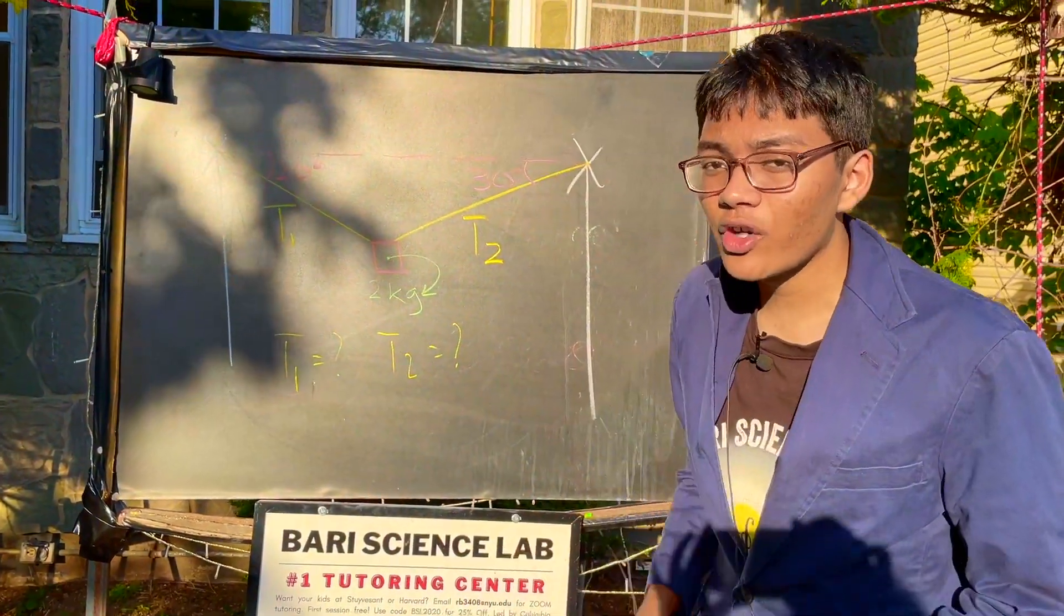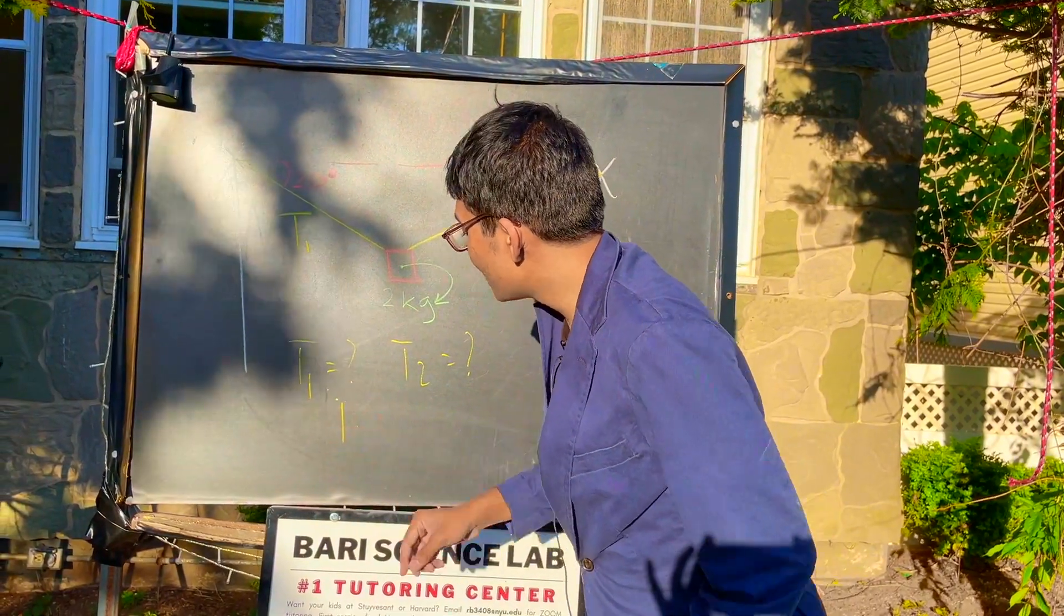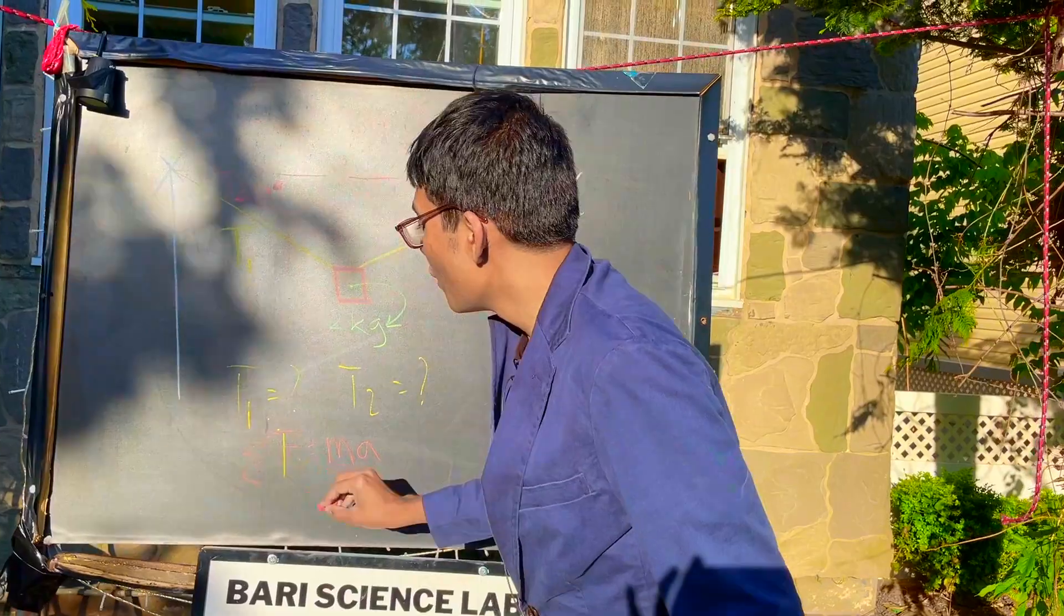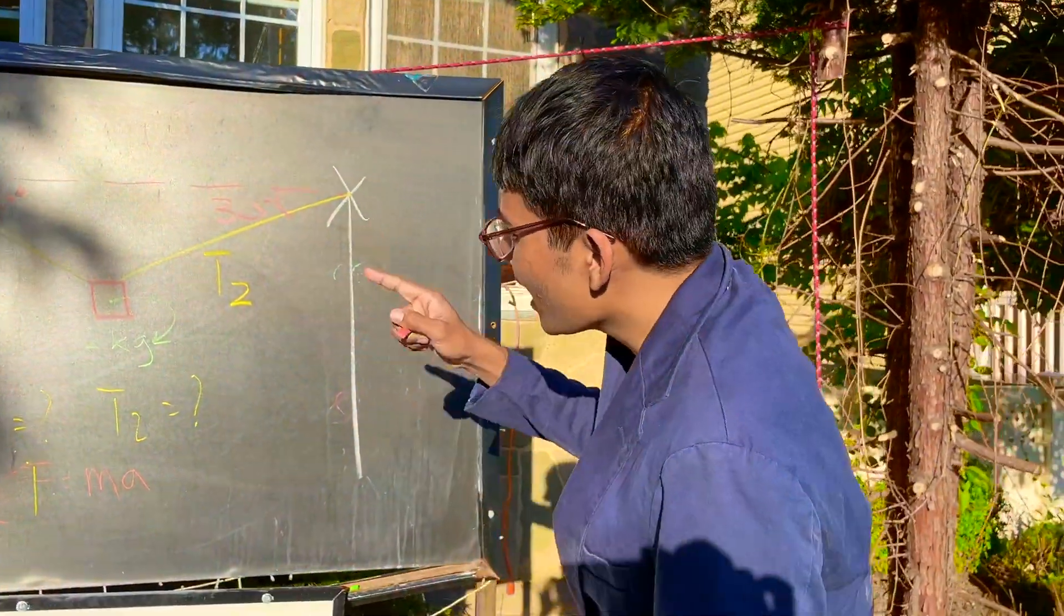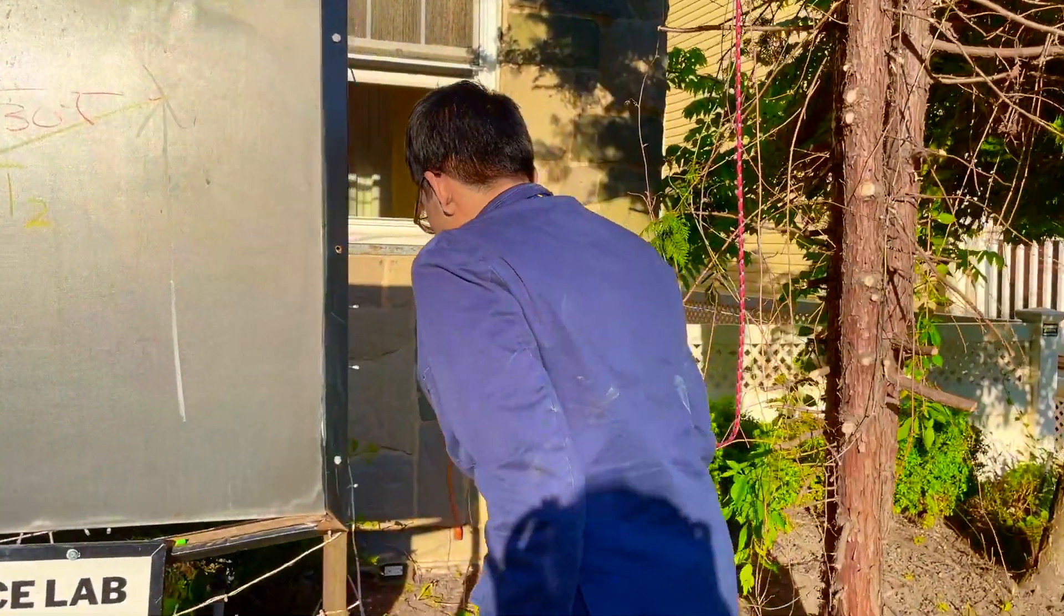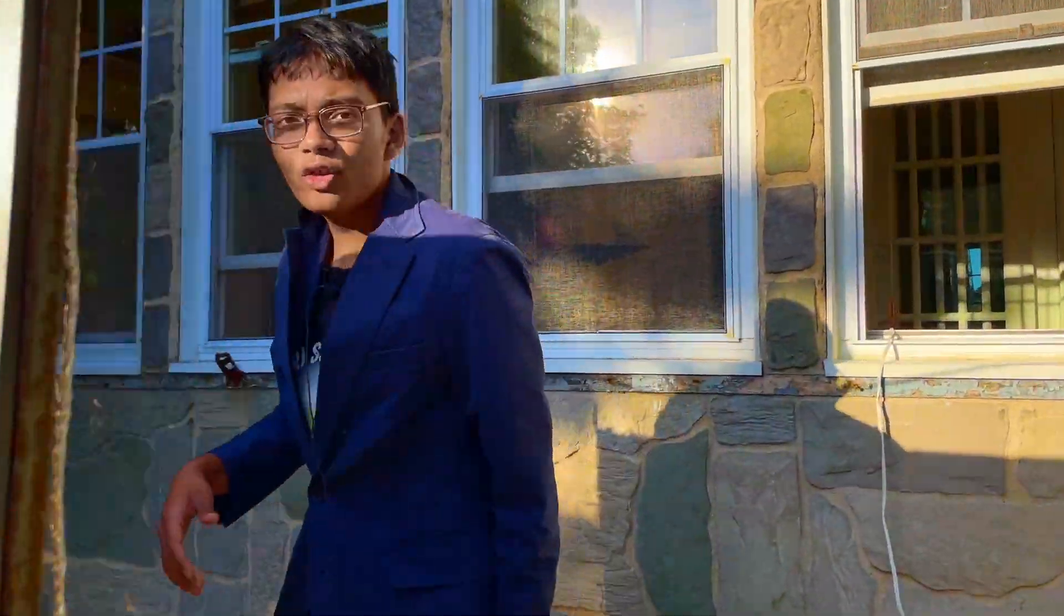The key formula to use here folks is F equals MA. Can you use that formula to your advantage to find what the tension in each of these ropes is? Now let's go ahead and check out the actual experiment which is behind this big black blackboard. So if we come over to the back here, here's our experimental setup.